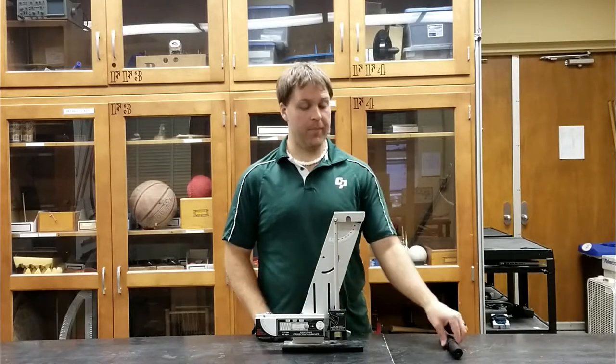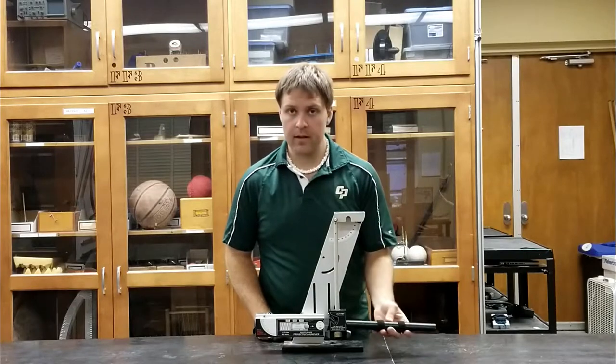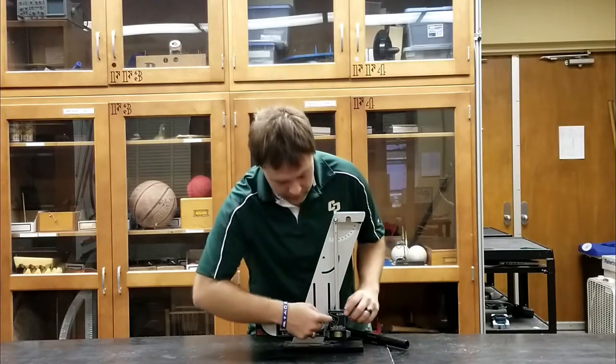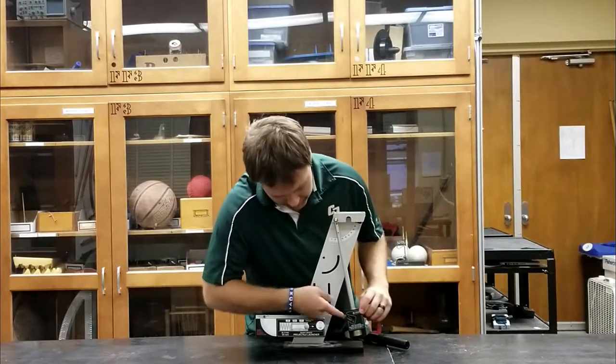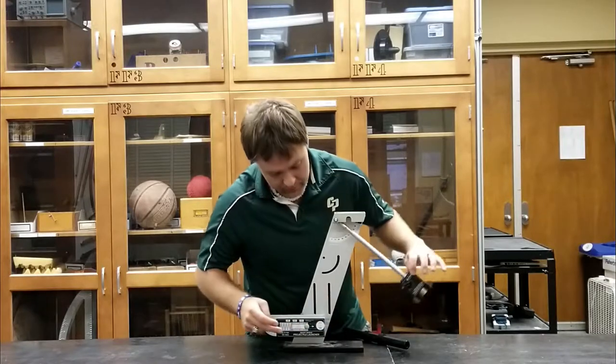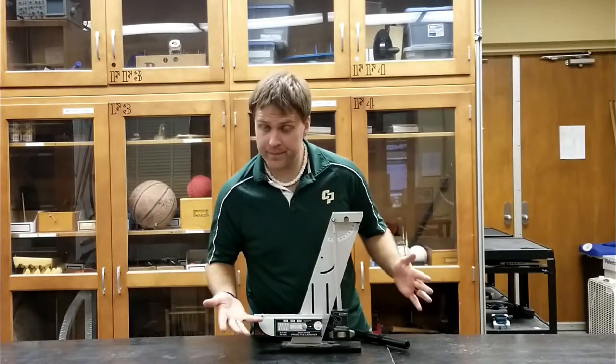This is our ballistics pendulum. It has this sponger used to load the ball in the cannon. A lot of times you'll find the ball inside this part. There's a little latch right here that keeps the ball from falling out after it's shot.